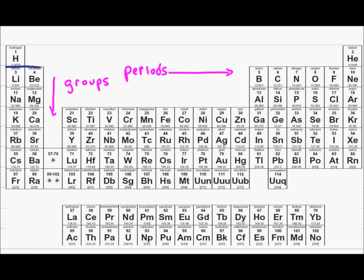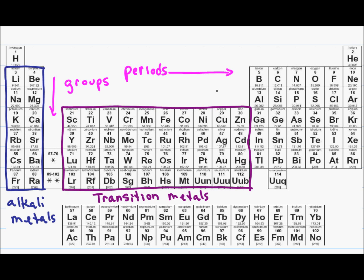On the left, we have the alkali metals, and in the center, we have the transition metals. The alkali and transition metals share metallic characteristics in that they are shiny, tend to conduct electricity, and are solid at room temperature. The one exception is mercury, which is liquid at room temperature.